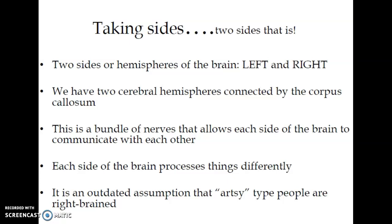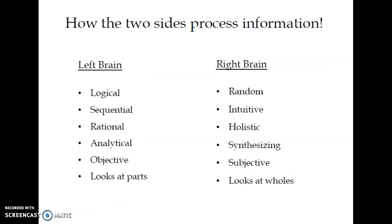There are two sides or hemispheres of the brain: left hemisphere and right hemisphere. We have two cerebral hemispheres connected by the corpus callosum. This is a bundle of nerves that allows each side of the brain to communicate with each other. Each side of the brain processes things differently. It is an outdated assumption that artsy type people are right-brained.